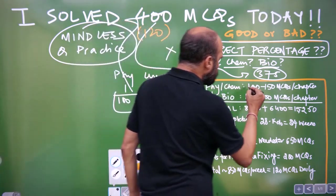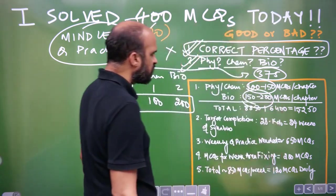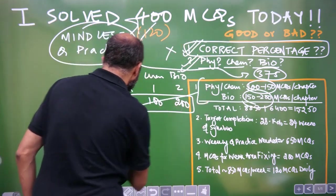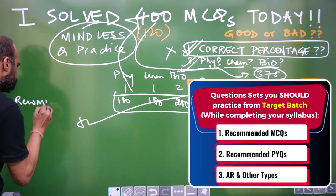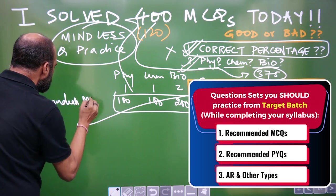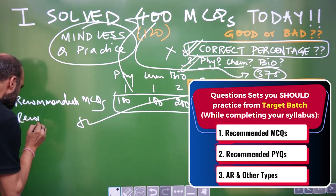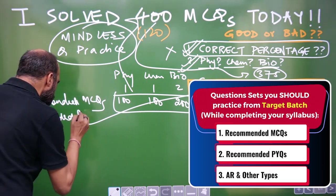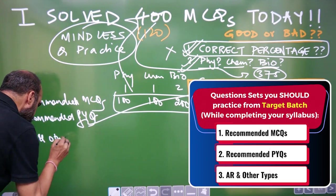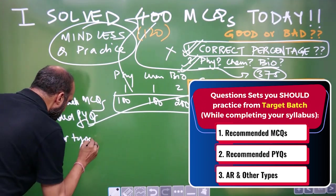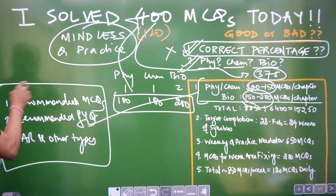So, in physics, chemistry, I have told you 100 to 150 questions per chapter. In bio, 150 to 200 questions per chapter. Where is this coming from? Recommended NCQs in target batch, recommended PYQs and AR and other types. Right? This is what we need to do.